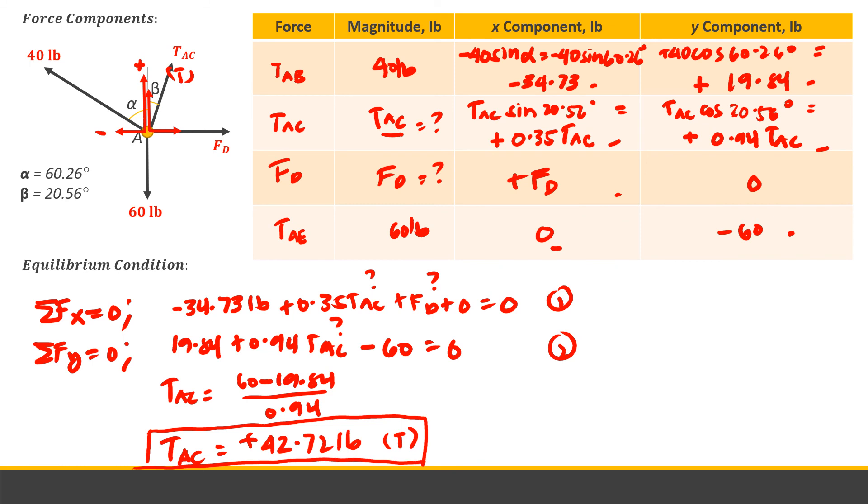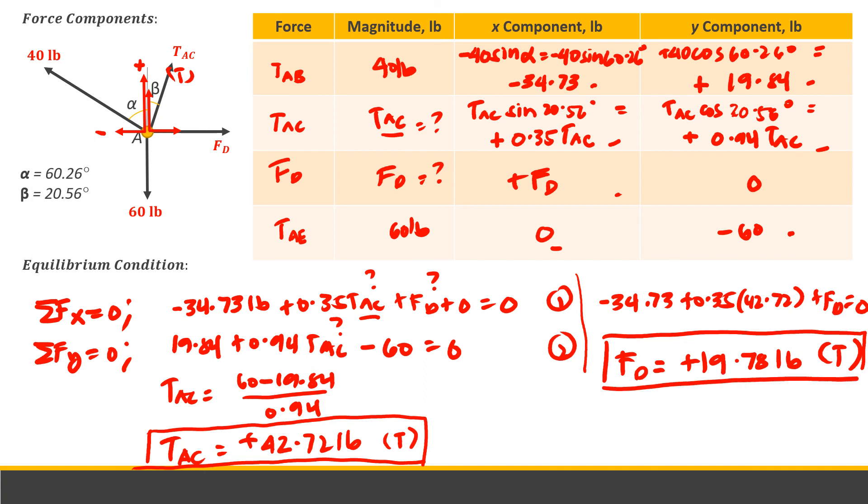TAC is solved, so FD is what we need. So FD equals positive 19.78 pounds, which is also in tension. Since positive, it's obvious that the effect of the flow or the drag force on the hull is positive. Therefore, TAC and FD equals 42.72 pounds and 19.78 pounds.